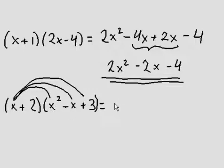So x times x squared is x cubed. x times negative x is negative x squared. x times 3 is 3x.